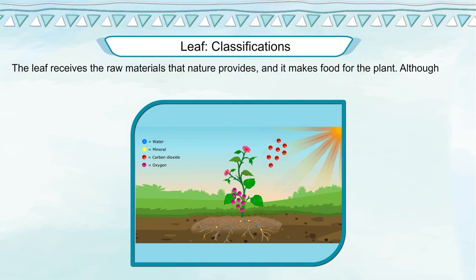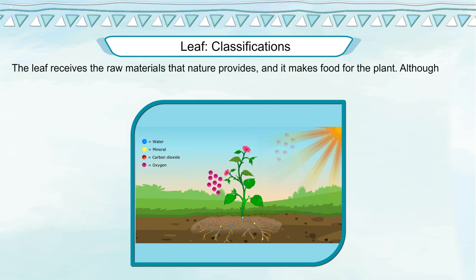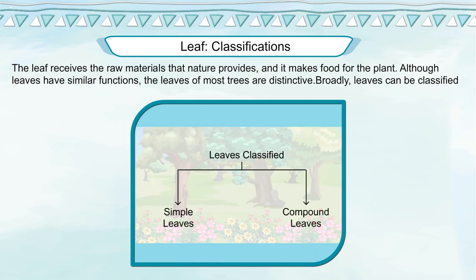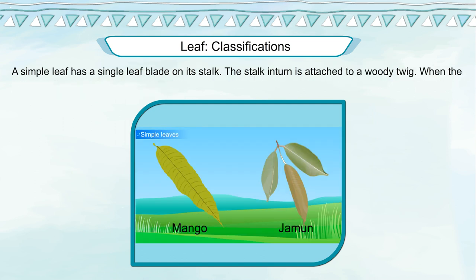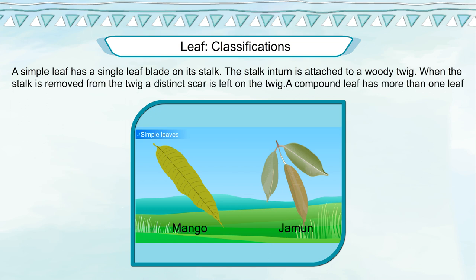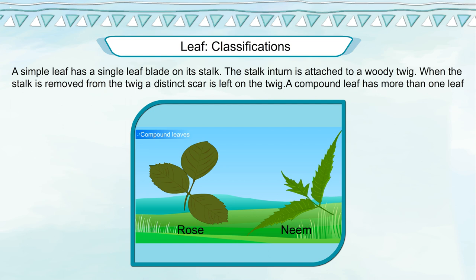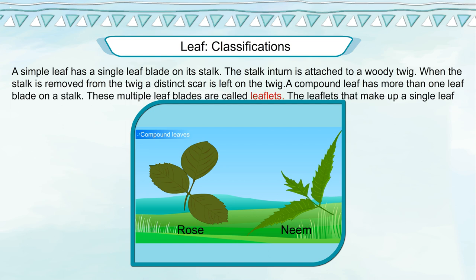Leaf classifications. The leaf receives the raw materials that nature provides and makes food for the plant. Although leaves have similar functions, the leaves of most trees are distinctive. Broadly, leaves can be classified as simple leaves and compound leaves. A simple leaf has a single leaf blade on its stalk, which is attached to a woody twig. When the stalk is removed from the twig, a distinct scar is left on the twig.